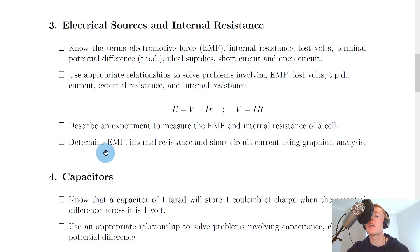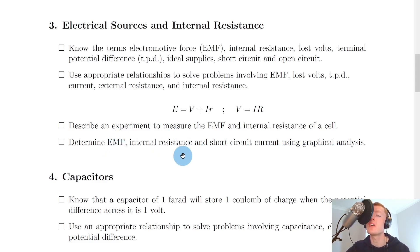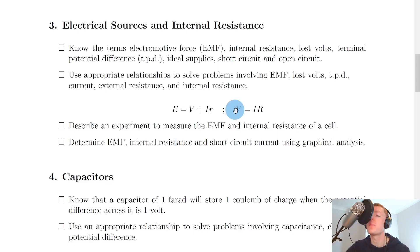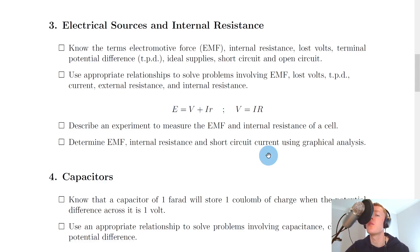Lastly, it says to determine EMF, internal resistance, and short circuit current using graphical analysis. If given a graph, you need to work out the EMF, the internal resistance, and also the short circuit current. For short circuit current, we say the load resistance R equals zero, which means the terminal potential difference V equals zero. Substituting into the EMF equation gives E equals I times r. So you can sub V equals zero for short circuit current.